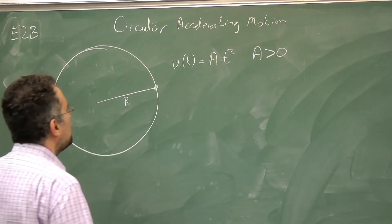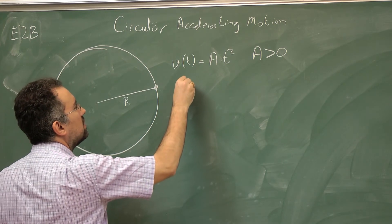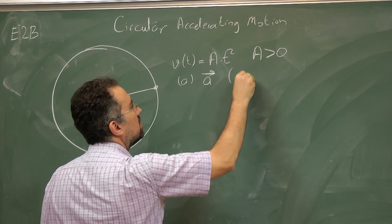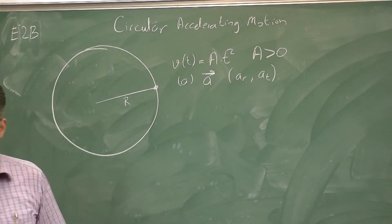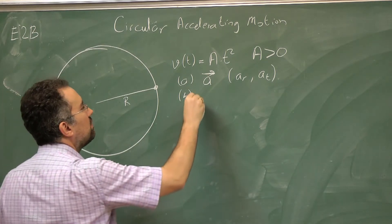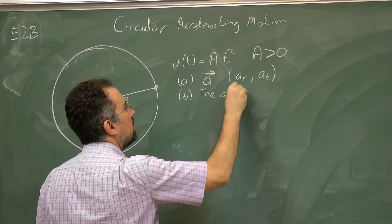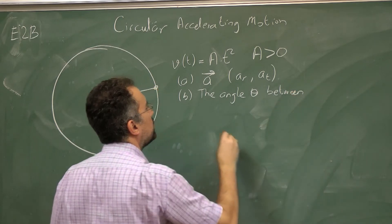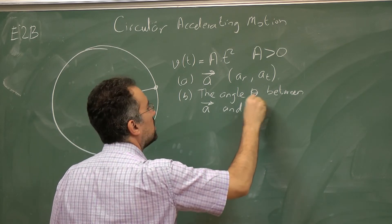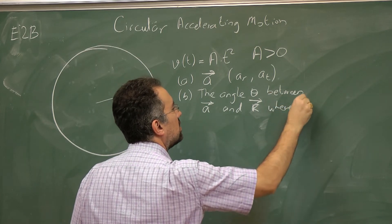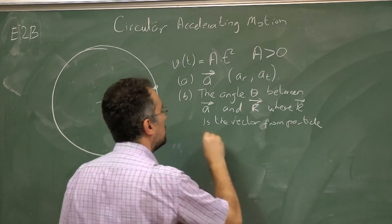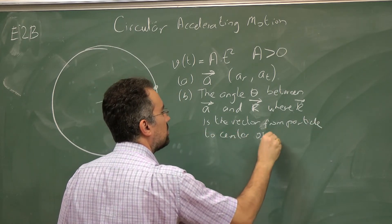The question has two parts. Part A: find the acceleration vector — that means find the radial and tangential components of the acceleration as a function of time. Part B: find the angle theta between the acceleration vector and r, where r is the vector from the particle to the center of the circle.